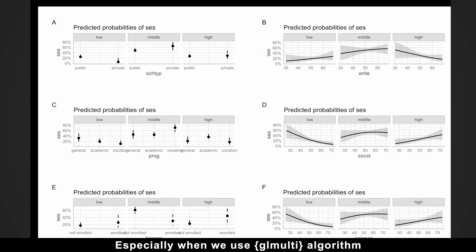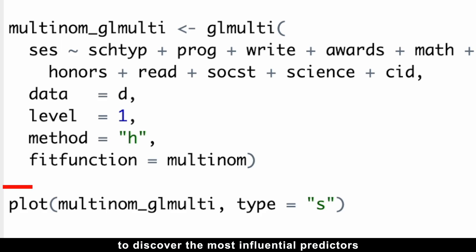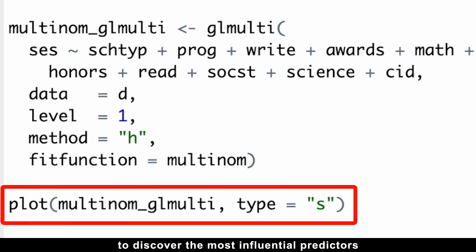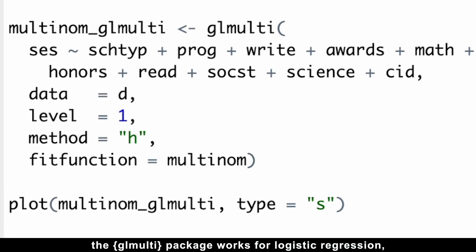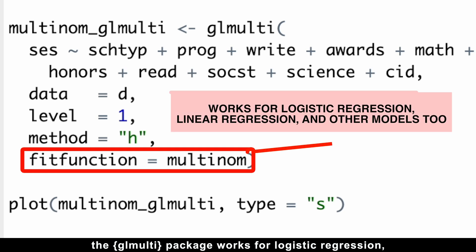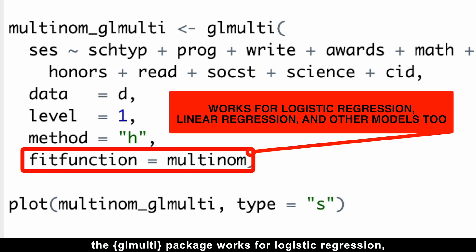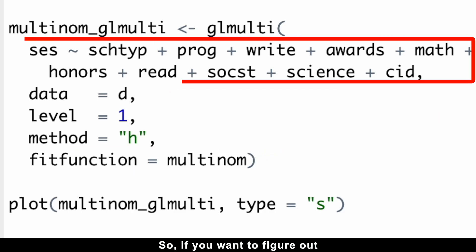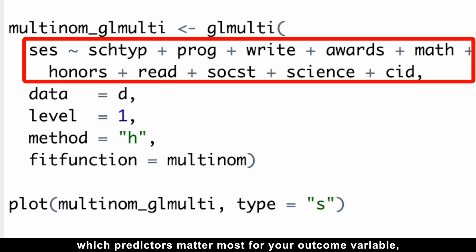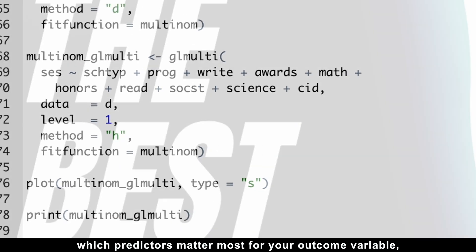Multinomial regression is incredibly powerful because it handles multiple outcome categories and delivers a wealth of results, making it a game-changer for complex data. This is especially true when we use the glmulti algorithm to discover the most influential predictors and find the best model. The glmulti package also works for logistic regression, linear regression, and other models too.